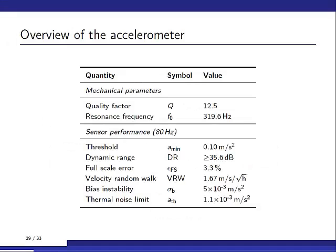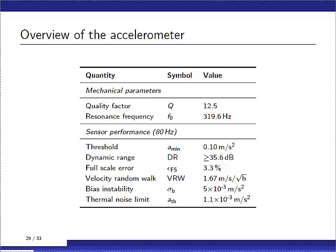Here are some numbers of the biomimetic accelerometer. It's a MEMS system, as we already saw. Resonance is about 320 Hz. Dynamic range, well, it is at least 35.6 dB, due to the limitations of the shaker. The threshold of 0.1 meter per second squared. Error on the full scale of about 3%. Of course, the random walk and bias instability are above the thermal noise limit. The thermal noise limit is determined by the Brownian motion. And we are not there yet. As you can see, there is really a factor in between. Mostly due to the used electronics, and also environmental conditions, due to the building vibrations, etc.